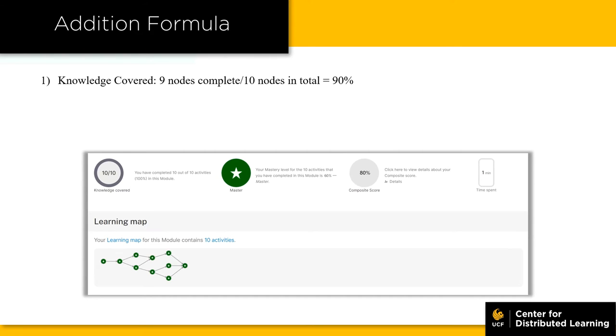First, knowledge covered refers to your progress in the module. If there are 10 lesson nodes in a module and you've completed 9, your knowledge covered is 90%.